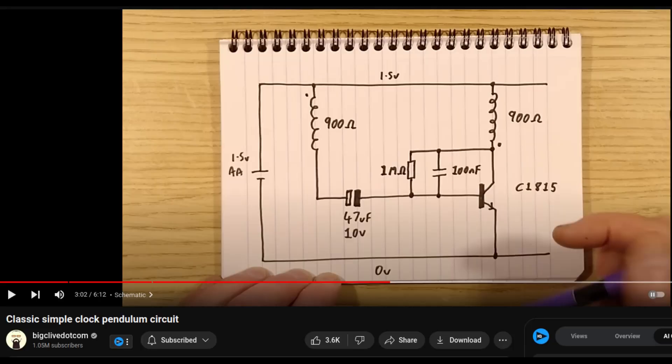Now here is that circuit got from bigclive. It's supposed to be a classic simple clock pendulum circuit but it works fine on a pulse motor. My coils are not 900 ohms, they're actually 50 ohms each and they're made of 34 AWG wire, I think about six or seven hundred turns. The 47UF capacitor you can see in the middle, that's actually now a 10, and the one mega ohm resistor that goes to the base is actually a hundred K.